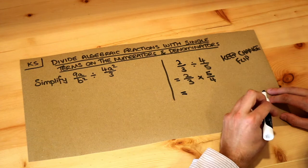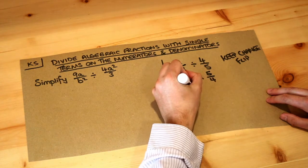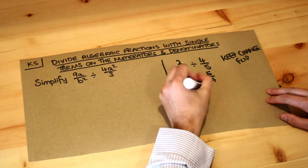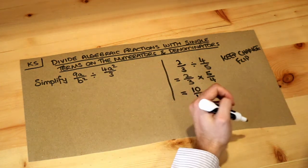And then to times two fractions, we just multiply the numerators, so two times five is ten, and we multiply the denominators, three times four is twelve. And then we can always simplify that fraction.